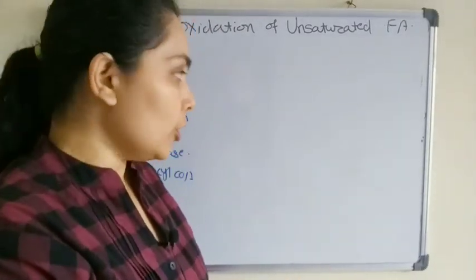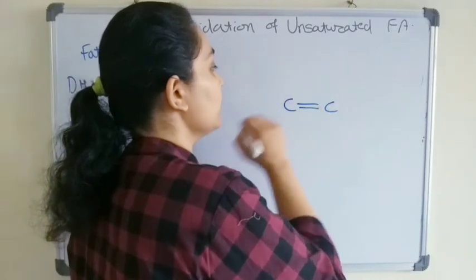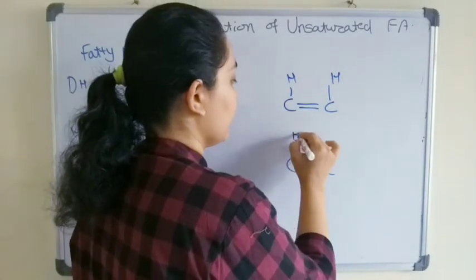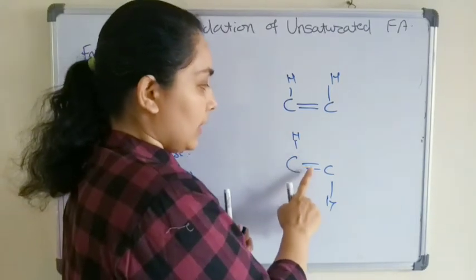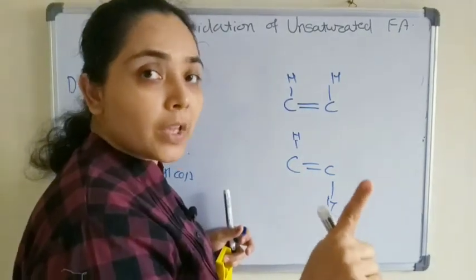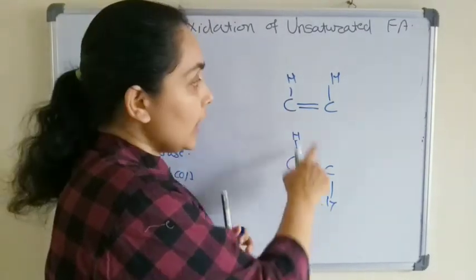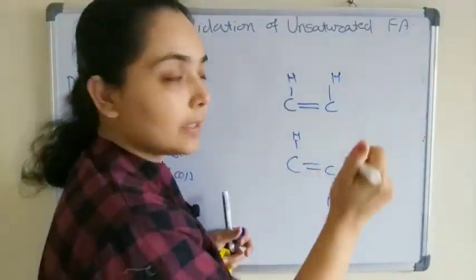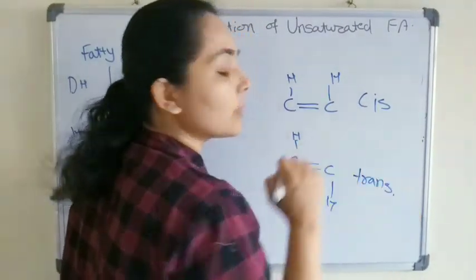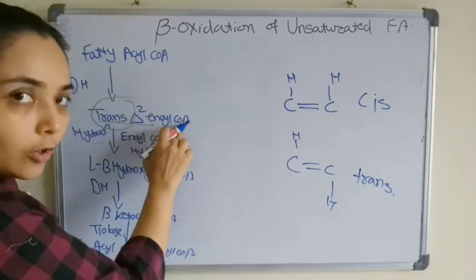Let us clarify what cis and trans mean. In a fatty acid chain, where there is a carbon-carbon double bond, if the hydrogen atoms attached to the carbons involved in the double bond are on the same side, it is known as the cis form. If they are on opposite sides, it is known as the trans form. After dehydrogenation of saturated fatty acid, there is formation of trans-delta-2-enoyl CoA.